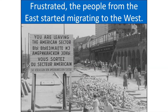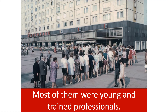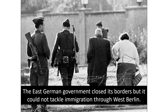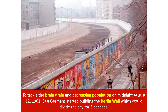Frustrated, people from East Germany started migrating west. Most were young trained professionals, which is why it's considered a brain drain. The East German government closed its border but couldn't stop migration through West Berlin. To tackle the brain drain and decreasing population, on midnight August 12, 1961, East Germans started building the Berlin Wall, which would divide the city for three decades.